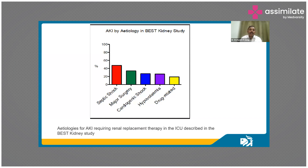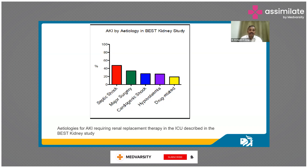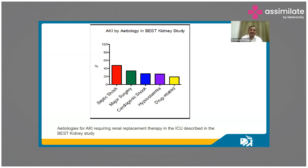Regarding the etiology of AKI, septic shock is the most common etiology in patients requiring renal replacement therapy, according to the BEST kidney study. This is followed by major surgery, cardiogenic shock, hypovolemia, and drug-related causes. Septic shock is on top when it comes to AKI requiring RRT.